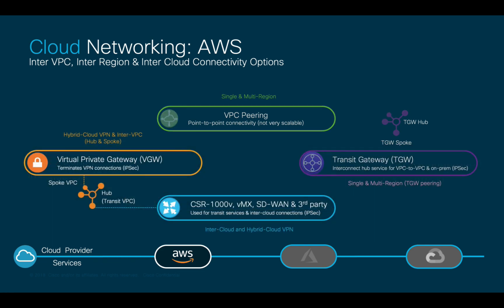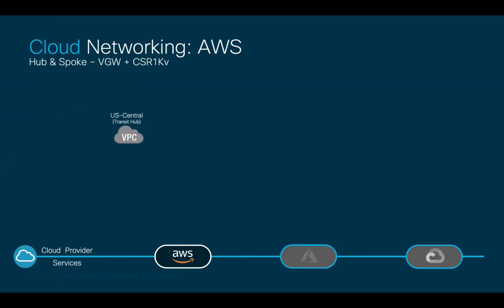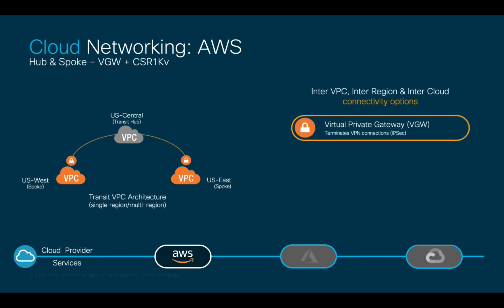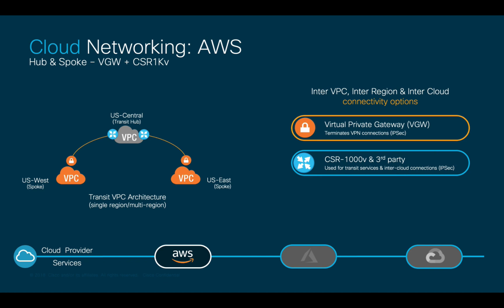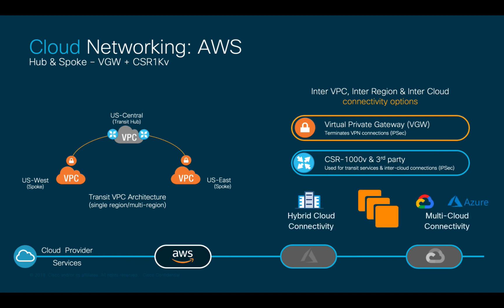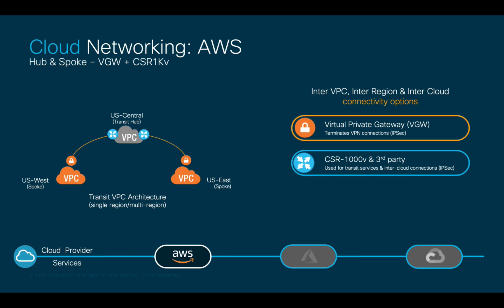As a second option, we have hub and spoke configurations, where there is normally a hub or transit VPC and multiple spoke VPCs. For these types of setups, AWS Virtual Private Gateways or VGWs are commonly used at the spoke level, while routers like CSR1000v are used at the hub level. IPsec connectivity is established between each hub CSR and spoke VGWs on each VPC. CSR routers are commonly deployed as EC2 instances to connect to on-prem environments and other clouds. This implementation option has a 1.25 gigabits maximum bandwidth limit for each tunnel, and CSRs are charged by AWS just as with any EC2 instance.